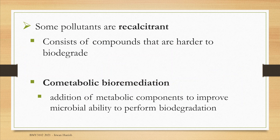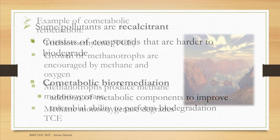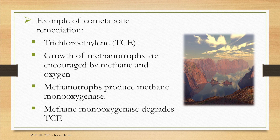Some pollutants are harder to biodegrade — we call them recalcitrant pollutants. Our solution for these is co-metabolic bioremediation, where we add metabolic components to help microorganisms biodegrade the pollutants. One example is TCE, or trichloroethylene, a groundwater pollutant that industries use as a solvent. Here, we introduce methanotrophs at the site of TCE contamination. Methanotrophs are microorganisms that use methane as a carbon source; the genera usually have the word 'methyl' in them, like Methylomonas or Methylosinus.